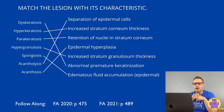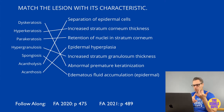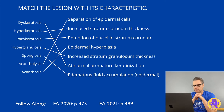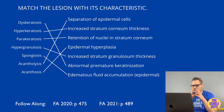Parakeratosis is characterized by retention of nuclei in the stratum corneum. You can also recognize this in psoriasis or actinic keratosis. Hypergranulosis is characterized by increased thickness of the stratum granulosum — an example would be lichen planus. Spongiosis is an epidermal accumulation of edematous fluid in the intercellular spaces — think eczematous dermatitis.